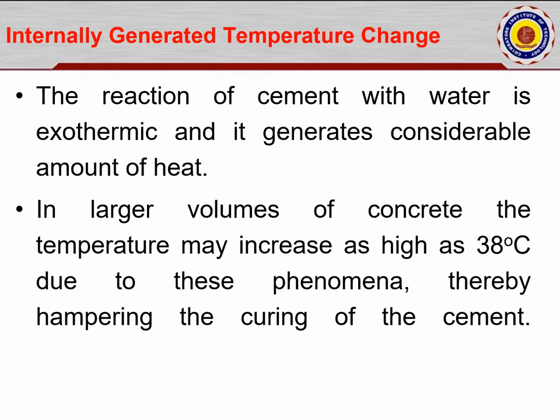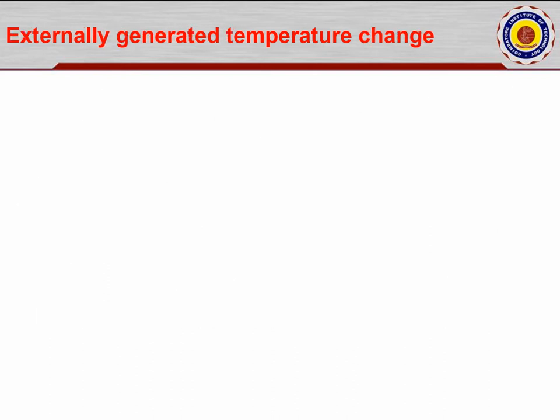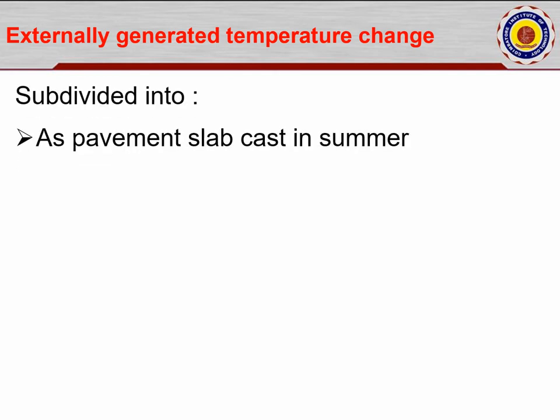In large volumes, such as M40 grade concrete where the quantity of cement is 400 kg and above, the internal temperature may rise up to 38 degrees centigrade, which may delay the curing of cement depending on conditions. For externally generated temperature changes, pavement slabs cast in summer are an example — concrete is usually cast in early morning or late at night so that expansion and crack development may be reduced.